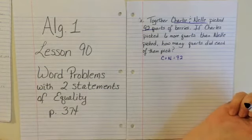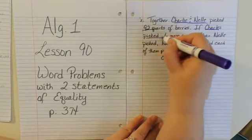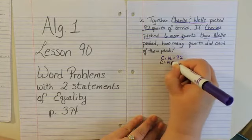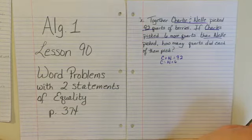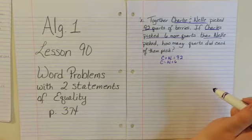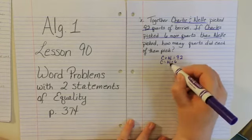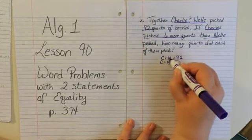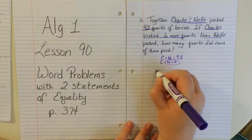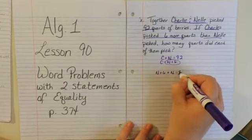We also know that Charlie picked six more quarts than Nellie did, so Charlie equals Nellie plus six. Or you could have said Charlie minus six equals Nellie — that would also be correct. Now we can use substitution. We know that Charlie equals Nellie plus six, so we substitute Nellie plus six for Charlie in the first equation, giving us Nellie plus six plus Nellie equals 92.